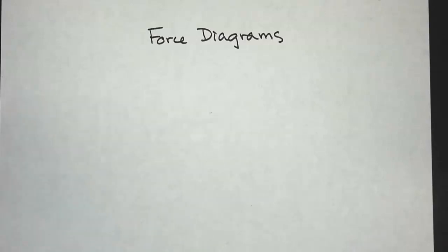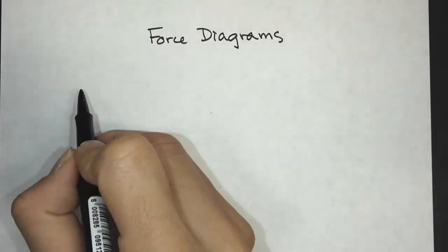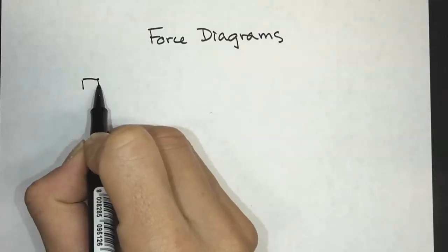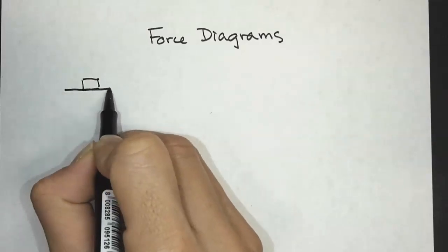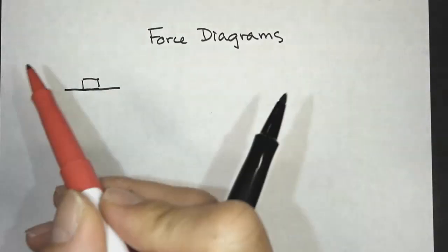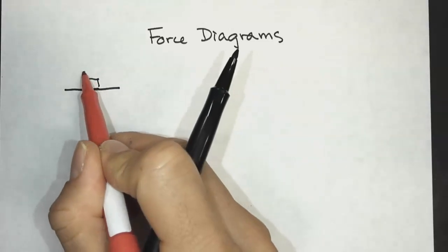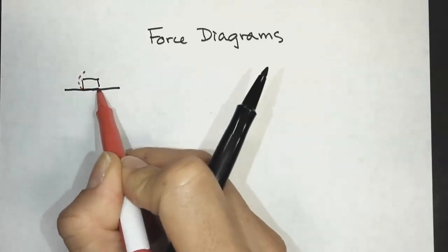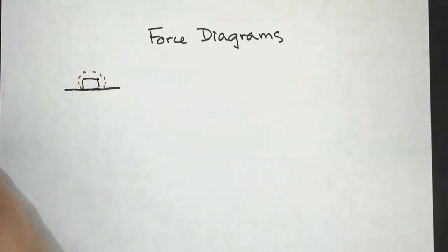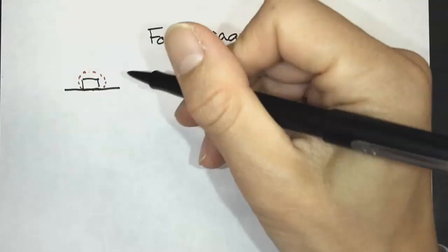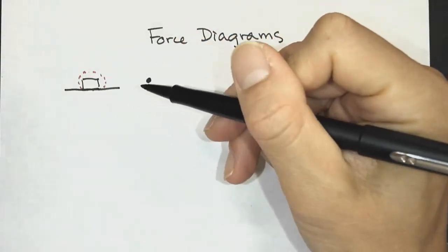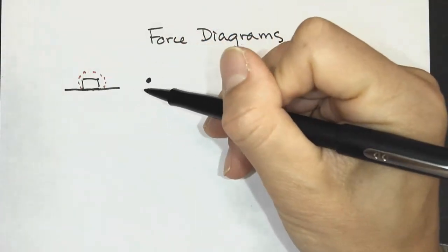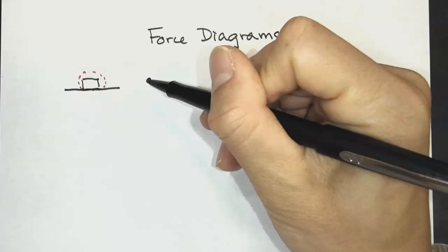In this video, you'll learn how to draw force diagrams. The first step is to sketch the object that you're drawing the force diagram for. The next step is to draw a system boundary. And then the next step is to draw a dot. All the forces will start with their tail on the dot.